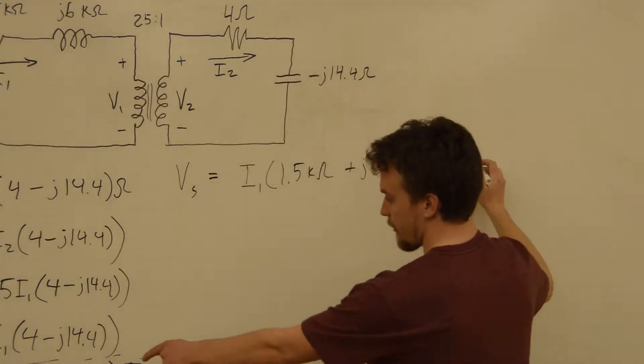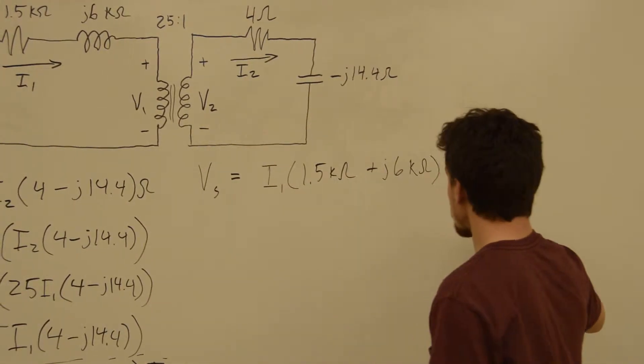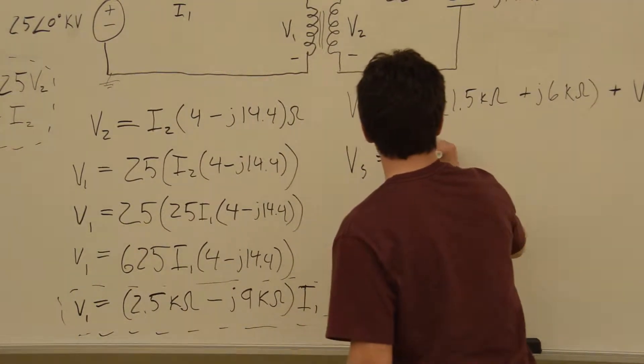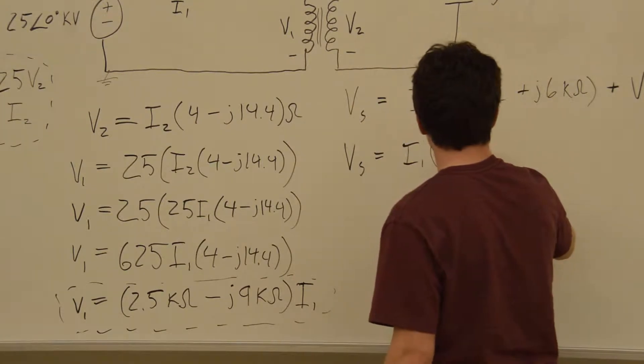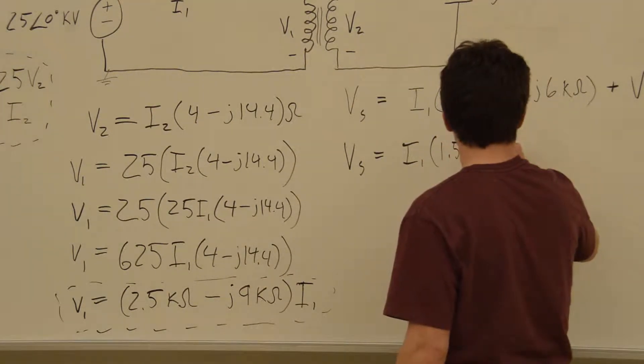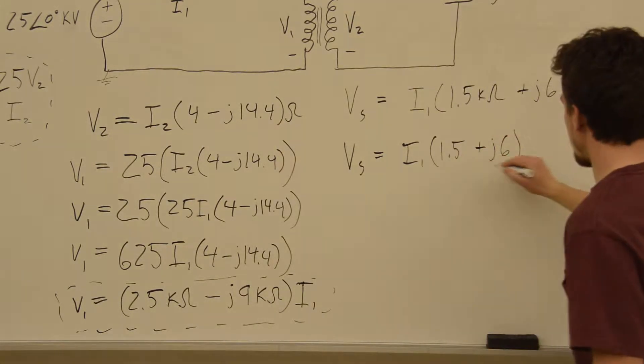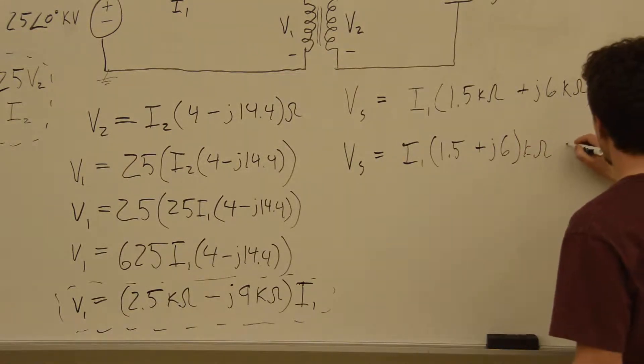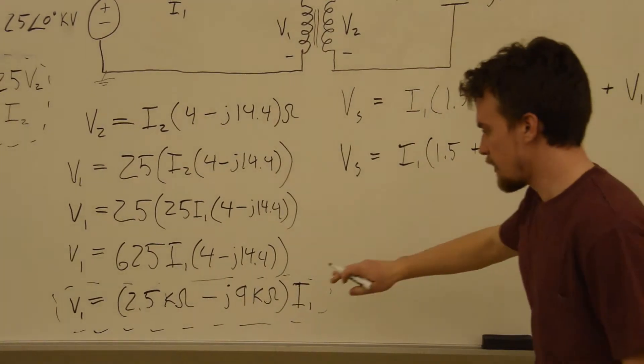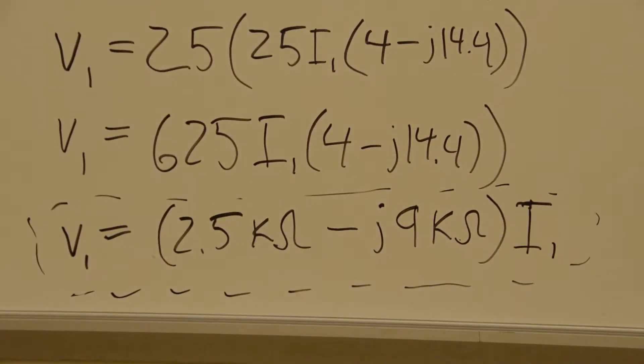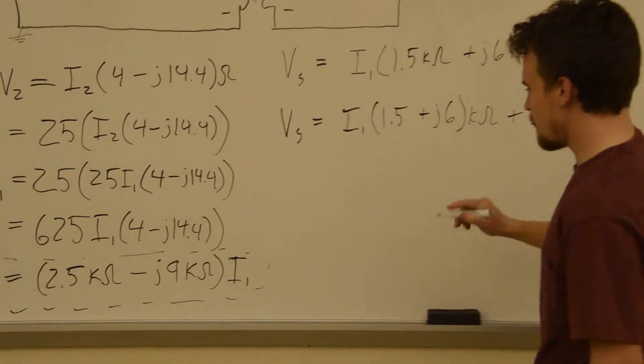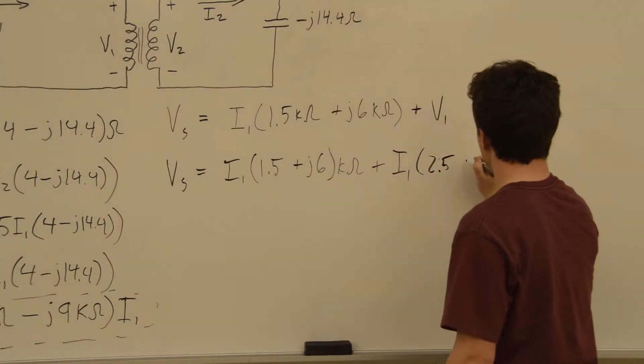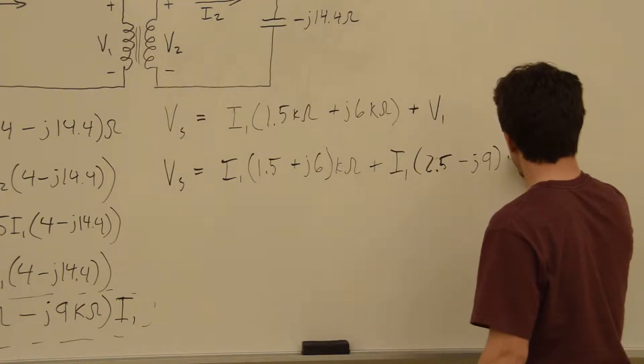And now this is just another equation that we got that's true all the time. And we have a value for V1 in terms of I1. So we'll just substitute that in here and get that Vs is equal to... Now these are in kilo ohms. I'm just kind of shortening it. We'll write it up here. Plus, now that our term for V1 is I1 times 2.5 minus J9. They're also in kilo ohms.